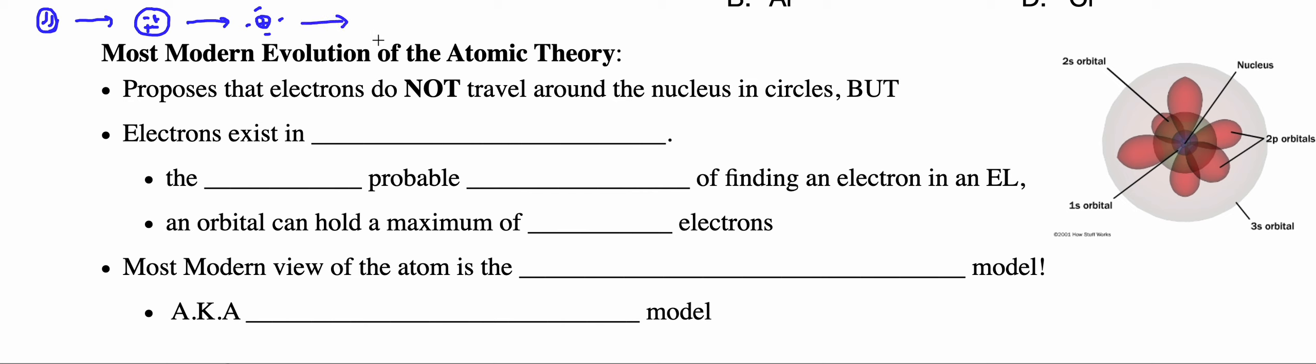Then we move on to Niels Bohr, who worked on the gold foil experiment with Rutherford. You have your positive nucleus with most of the mass, but those electrons circle the nucleus in those seven energy levels, so we have a planetary model.